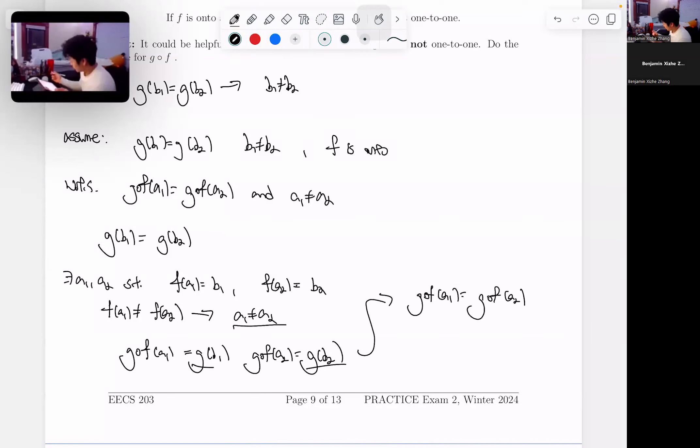However, we also know that a1 is not equal to a2. Thus, we know that g of f is not one-to-one.